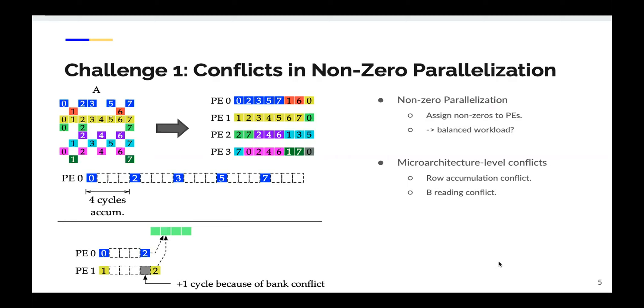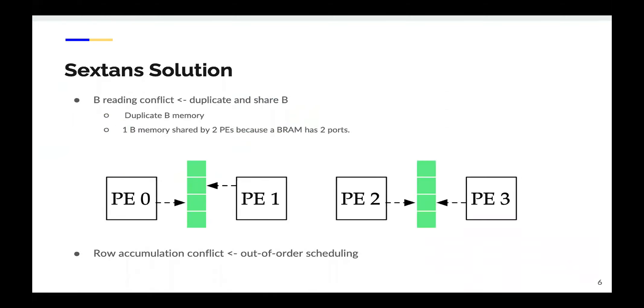The second is the B-reading conflict. We store part of B matrix in on-chip memory, but the memory port number is limited. So we cannot access the same memory from too many processing engines. Here, we assume that the memory has only one port. If P0 and P1 need to access the same memory at the same cycle, one PE must delay the access by one cycle. That incurs extra latency overhead. To address the B-reading conflict, in Sextense, we duplicate and share Bs. We first duplicate the B memory for processing engines to resolve the conflict issue. Because each BRAM has two ports, we share one B memory to two PEs to save half of the BRAM resource.